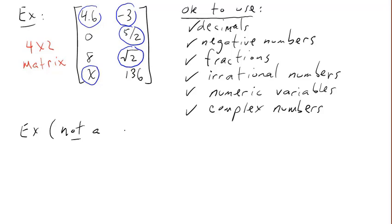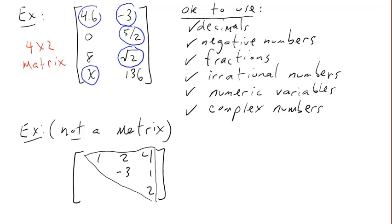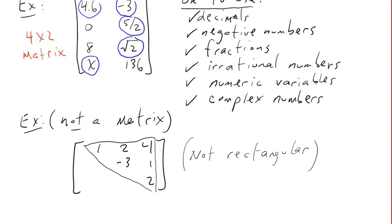Here's an example of something that's not a matrix. Let's start filling it in: 1, 2, 4. On the second row we skip a number, in the third row we also skip one. Well, that's not a rectangular array of numbers. There's some missing. It's triangular, not rectangular, and therefore not a matrix.